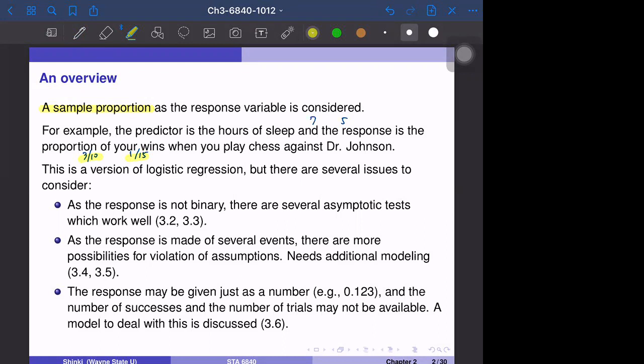So at first, maybe a positive side, the response is no longer binary. So 3 over 10 or 1 over 15 has more information than just binary response. And probably you have studied in the introductory statistics course that the sample proportion approaches to normal distribution, the normal random variable. So that fact makes the sum asymptotic results. So there are several asymptotic tests which work well for proportions, but not the binary outcomes. So that will be discussed in 3.2 and 3.3.